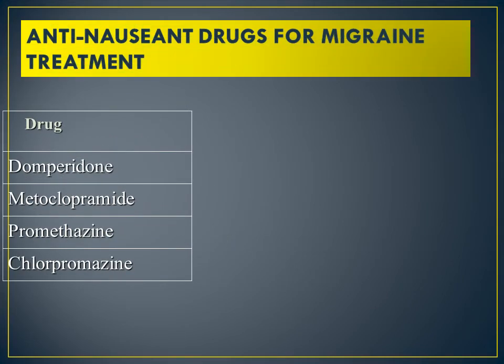Drugs for treatment of nausea and vomiting are also needed, since migraine is accompanied by nausea and vomiting. Antiemetic drugs used include domperidone, metoclopramide, promethazine, and chlorpromazine. Metoclopramide and domperidone are D2 antagonists acting on the vomiting center. Promethazine is an H1 antihistamine blocker.